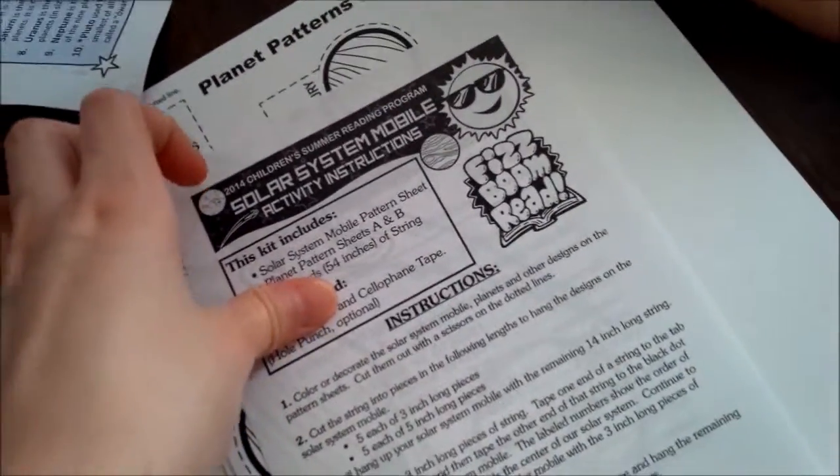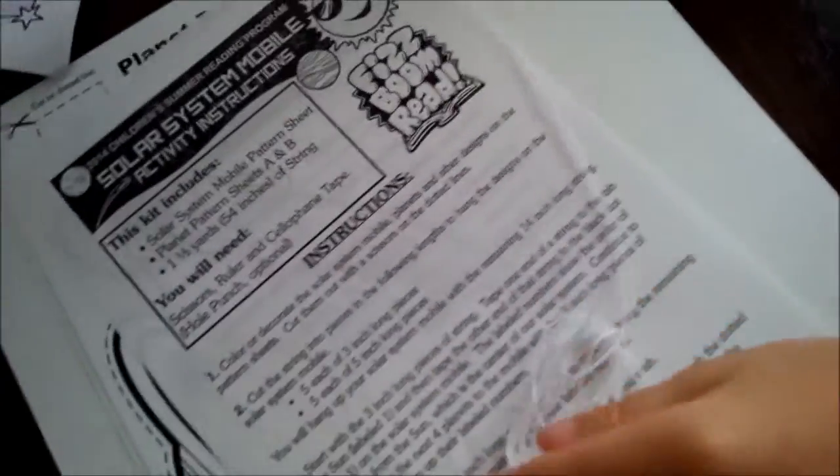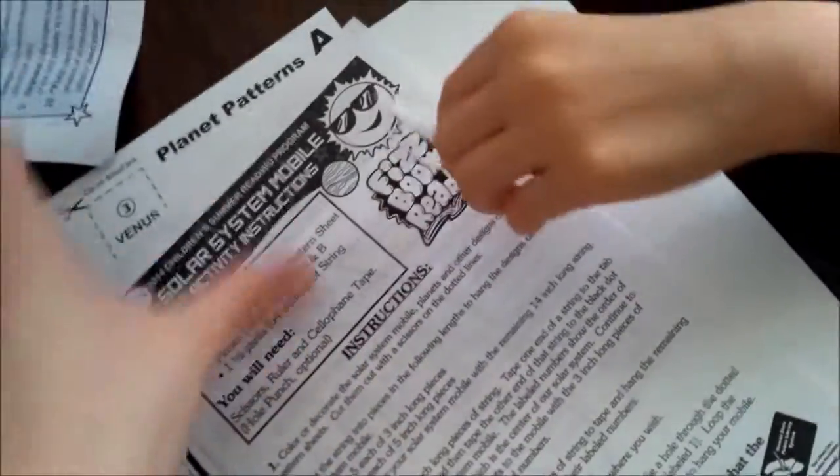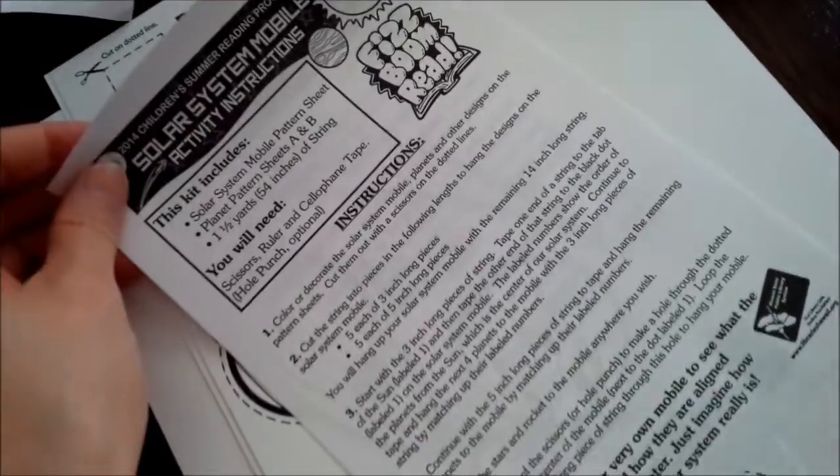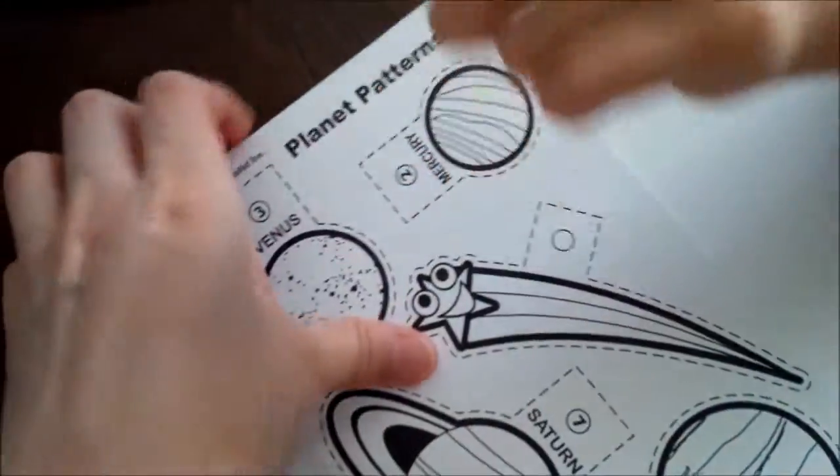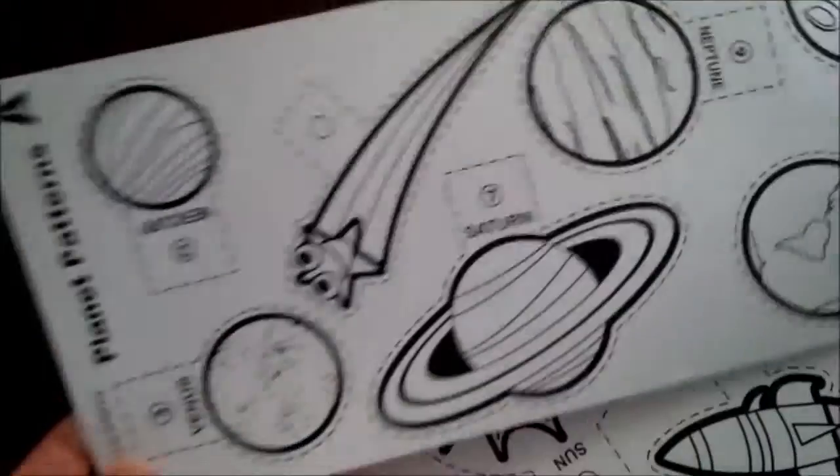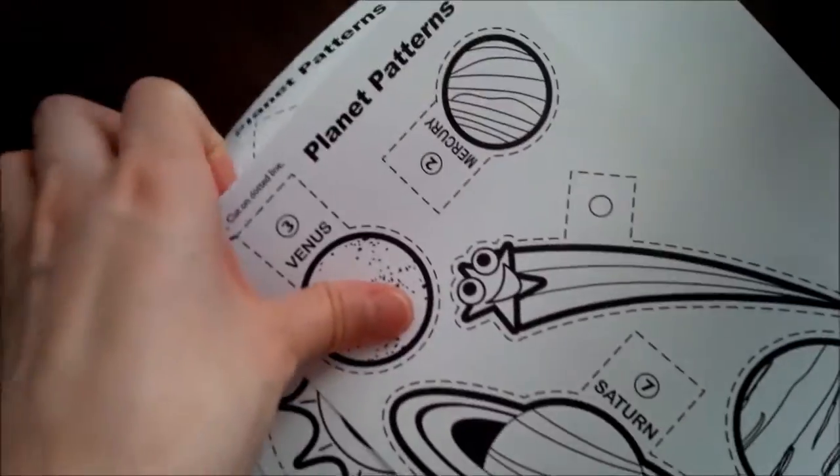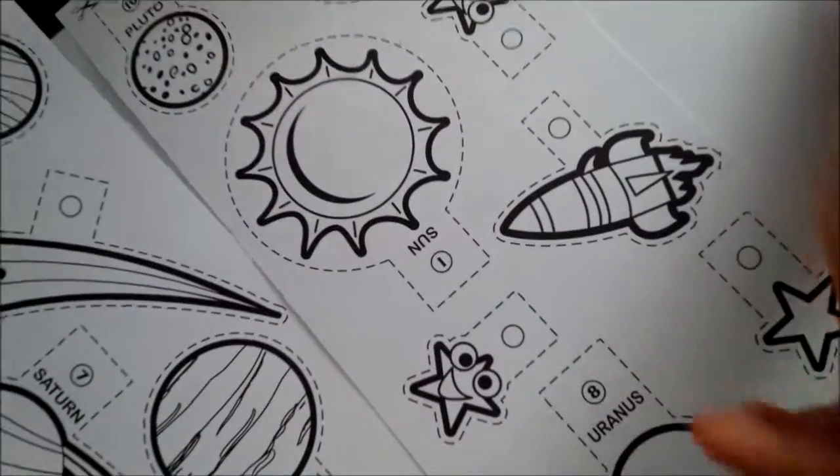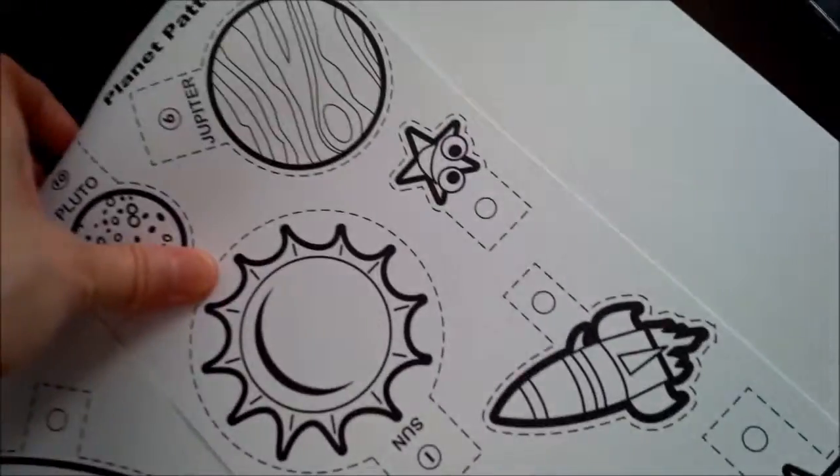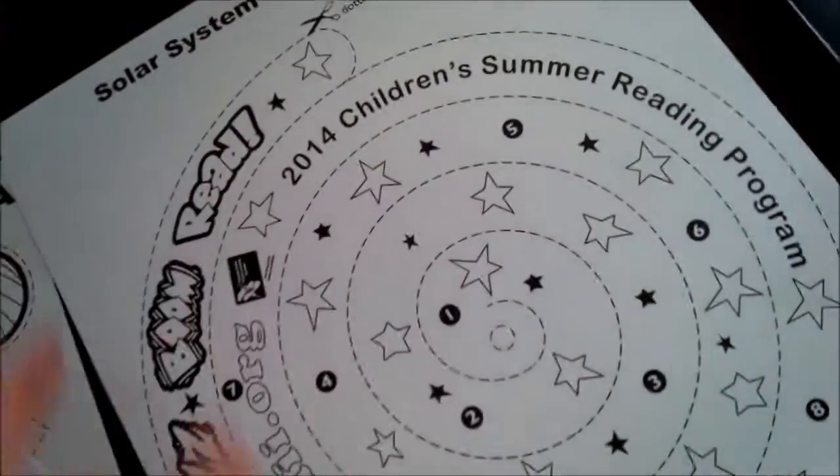Instructions on how to make a solar system mobile. There's a string, we're gonna make this in a little bit. And this is the planet patterns, so all the planets.